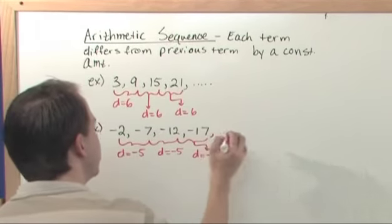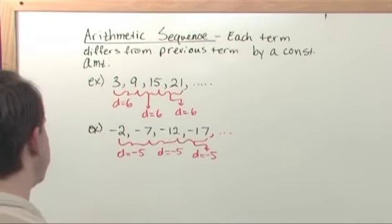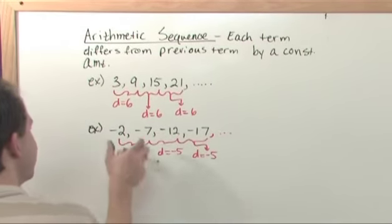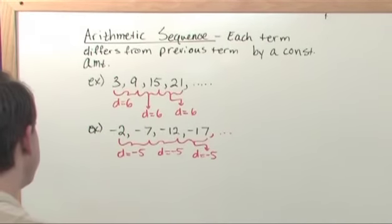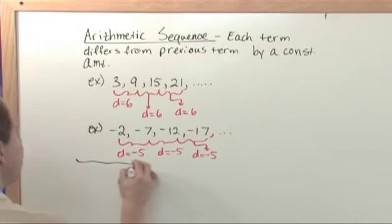So again, this is an arithmetic sequence as well, and this time the difference between the elements is negative 5. So it's really not that hard to understand when you write them out like this.